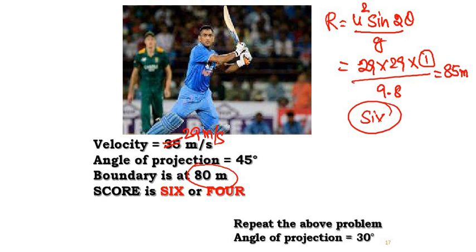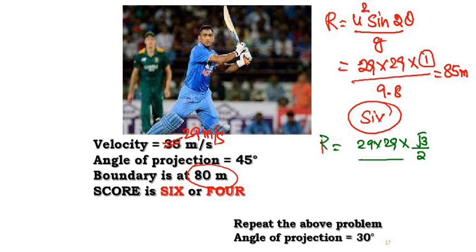Repeat the same problem, but now the angle is 30 degrees. R equals u squared times sine 2 theta divided by g — that is 29 into 29 into sine 60, divided by 9.8. Sine 60 comes from sine of 2 times 30. If you calculate, you get 74 meters. Will it be 6 or 4?